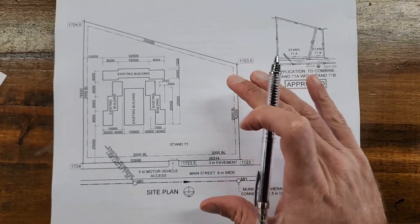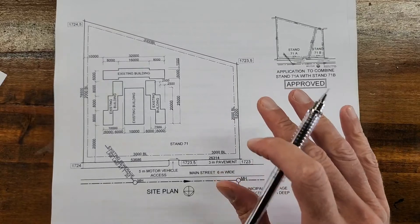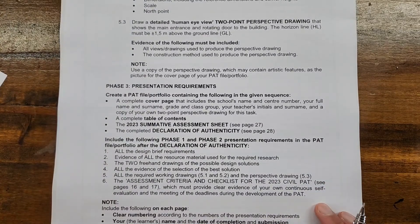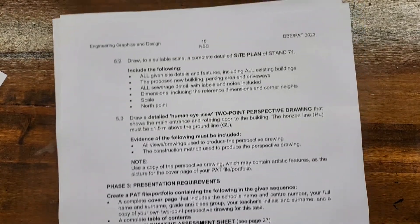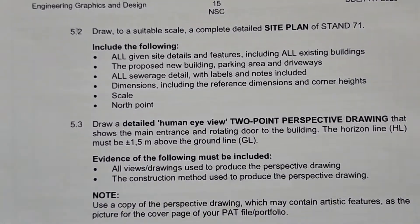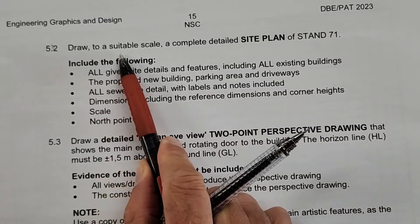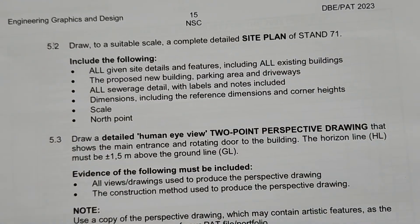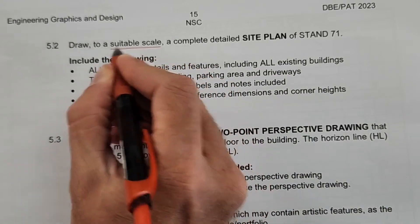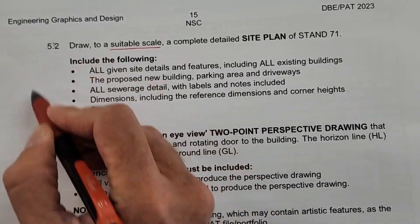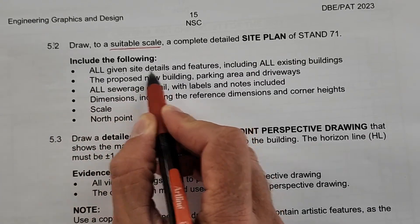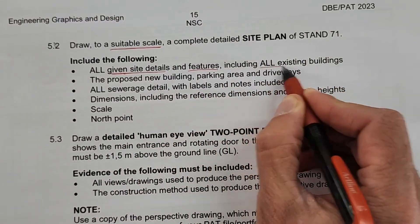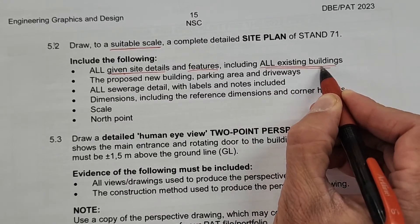We'll look at your requirements for the site plan to make sure you absolutely smack it. Before we look at what is given, let's look at the requirements and questions asked. On page 15 at the top, it talks about your site plan and specifies that you have to draw to a suitable scale a complete detailed site plan of Stand 71. Included in this drawing must be all given site details — everything they have provided — including all existing buildings.